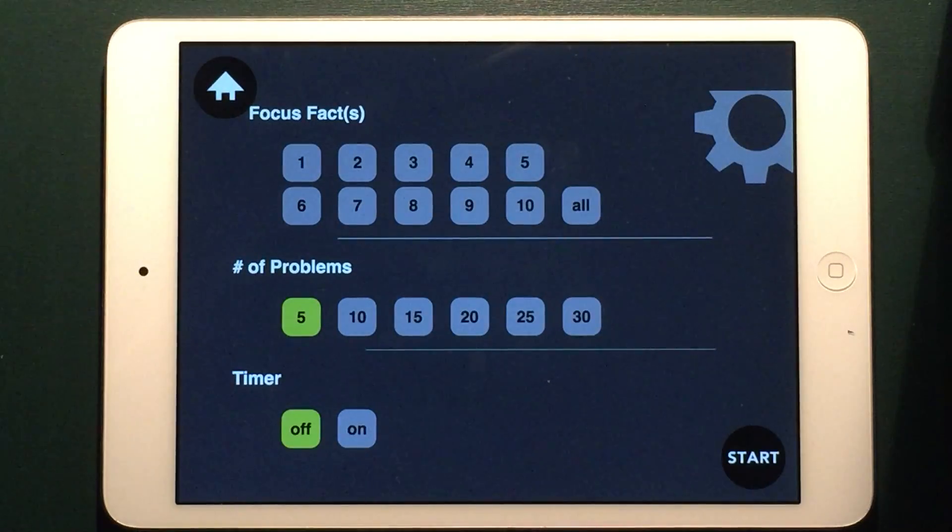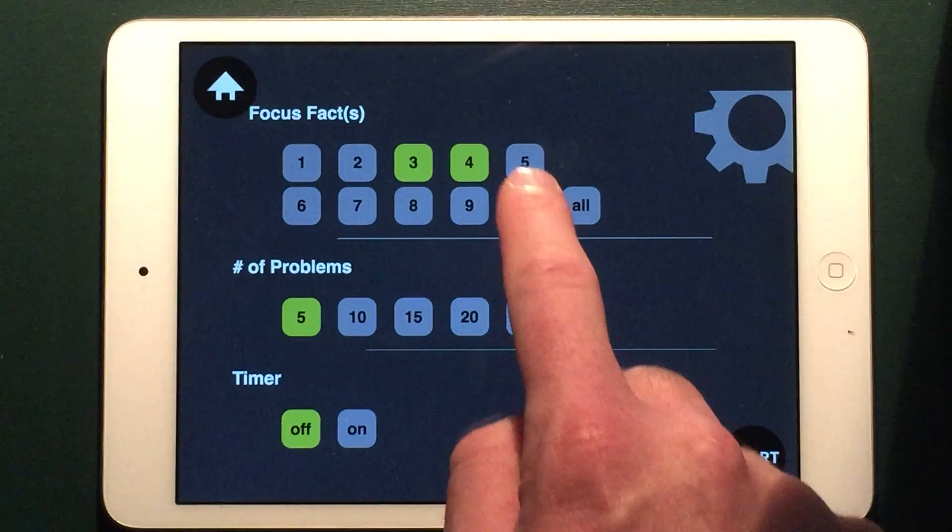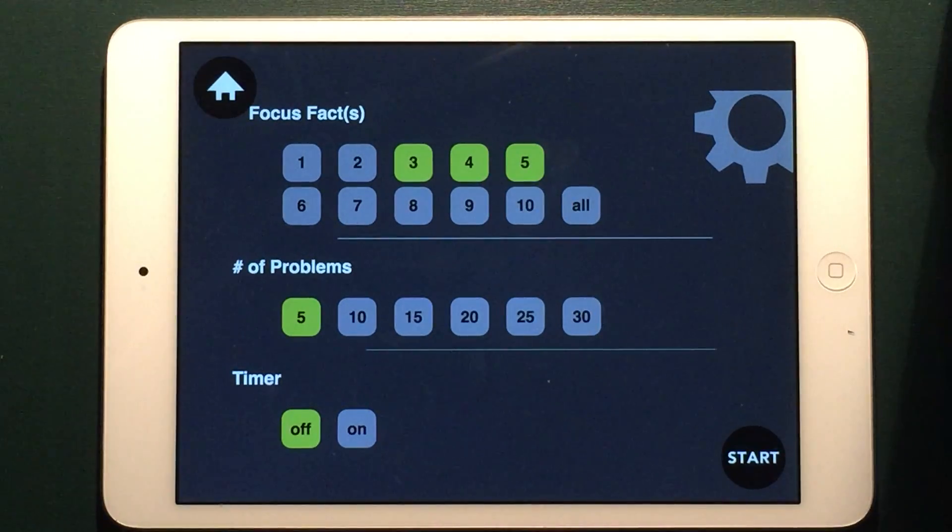In Practice mode, the first thing you need to do is select the focus facts you want to work on. So I'll do 3, 4, and 5, then specify the number of problems you want to do, and then decide if you want to have the timer on or off.